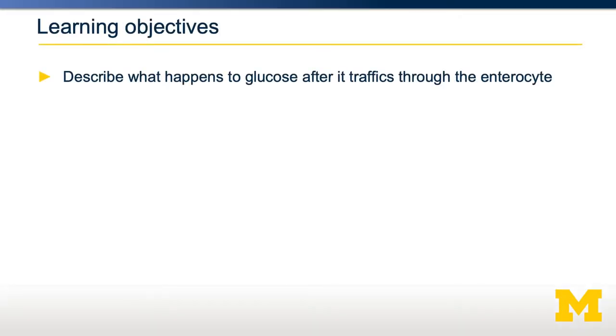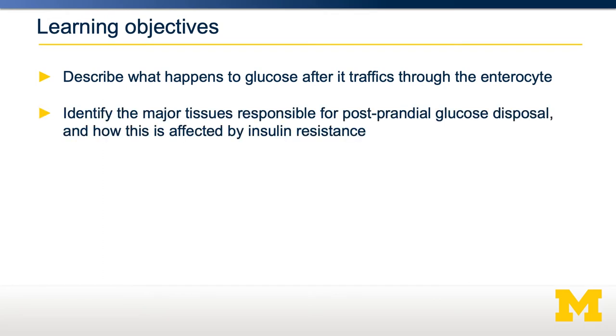To this point, we've been describing what happens when you digest and absorb carbohydrates into our blood. But then what happens next? How do we store and transport those carbohydrates between tissues that need them? In this video, we're going to describe what happens to glucose after it traffics through the enterocyte. We're going to talk about the major tissues responsible for postprandial glucose disposal and how this can be affected by insulin resistance and diabetes.